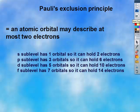Pauli's exclusion principle says an atomic orbital may describe, at most, two electrons. Since the s sublevel has one orbital, it holds two electrons. P has three orbitals, six electrons, and so on.